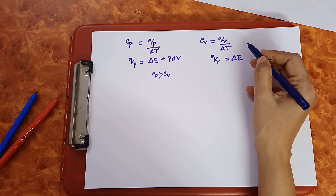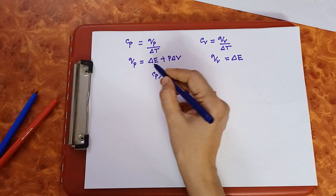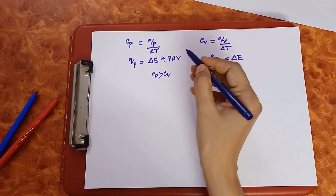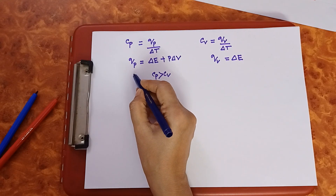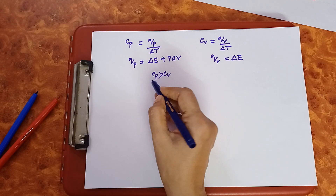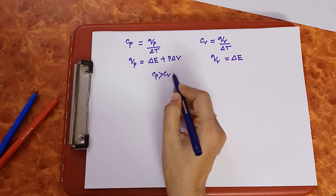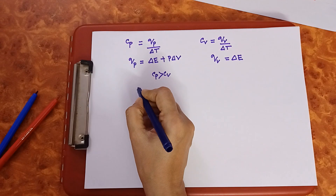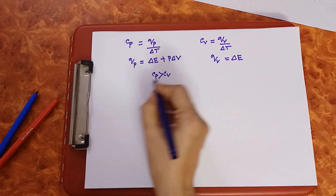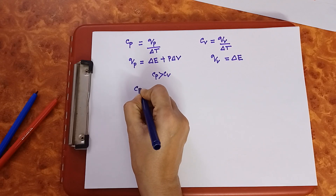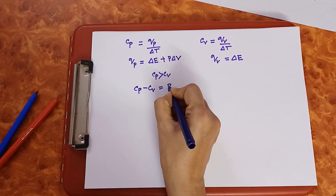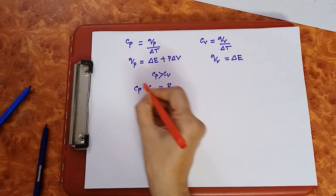To increase the same temperature, more heat is required when absorbed at constant pressure compared to constant volume. So Cp is greater than Cv for gases. Now let us derive the relation between Cp and Cv. The relation is Cp minus Cv equals R, where R is the universal gas constant.